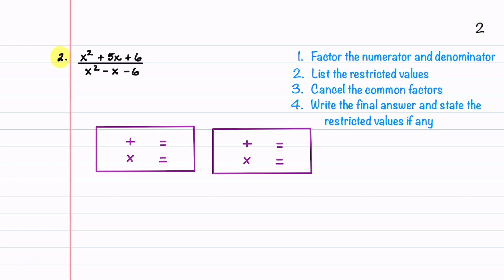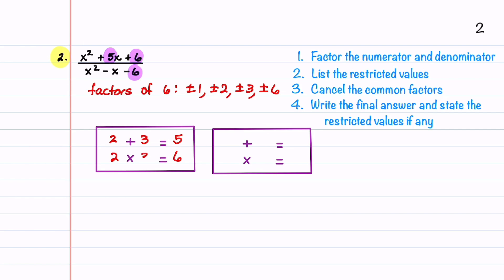To simplify our second example, we need to start by factoring both the numerator and the denominator. Since the constant term in both quadratics is 6 or minus 6, let's start by listing the factors of 6: plus or minus 1, plus or minus 2, plus or minus 3, and plus or minus 6. To factor the numerator, we need to find two numbers that add up to 5 and multiply to get 6. We can see that 2 plus 3 equals 5 and 2 times 3 equals 6, so our factors are 2 and 3. That gives us x plus 2 times x plus 3.